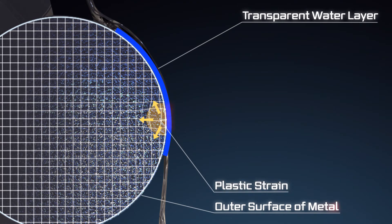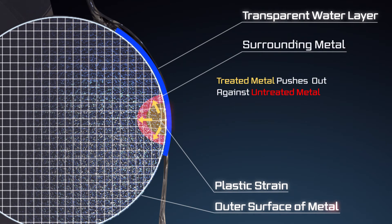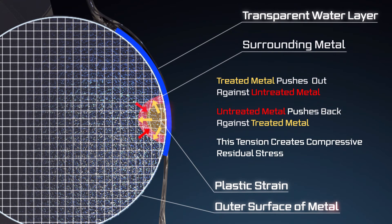Surrounding metal adapts to the microstructural change induced by laser peening, but it also pushes back against the laser-peened segment of the metal. The tension between these two forces creates beneficial compressive residual stresses that prevent metal fatigue.